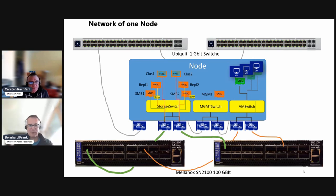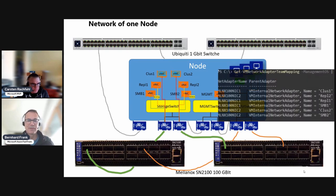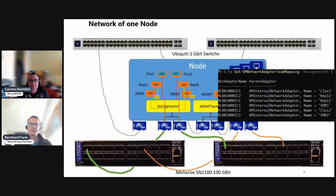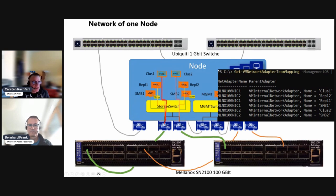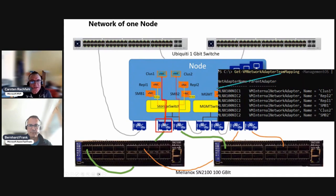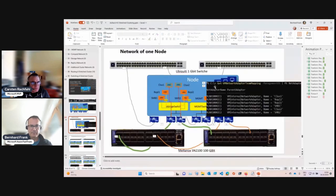It's also worth mentioning adapter teaming. In our setup, the virtual adapters are pinned to specific physical NIC ports — so all the class-one adapters (repel one, SMB one) are bound to the left 100 gig port, as we talked about in previous videos, and we also did the team adapter mapping. Importantly, our high-performance traffic stays within the switch — every node on one side is connected to that switch and doesn't cross over to the other switch.